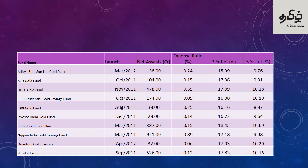All these mutual funds have 7-year CAGR data except Quantum Gold Savings Fund, which has a net asset of only 32 crore and an expense ratio of 0.06%. Despite the low AUM, in terms of 5-year and 3-year returns, the net returns for gold are similar across funds since the gold price fluctuates for all of them.